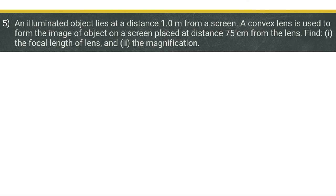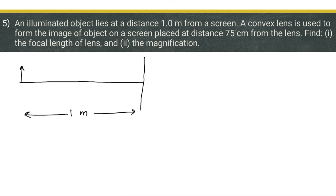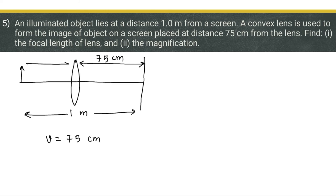Fifth numerical: an illuminated object lies at a distance of 1 meter from the screen. A convex lens is used to form the image of the object on the screen placed at 75 centimeters from the lens. The distance between the object and the lens is therefore 1 meter minus 75 centimeters, giving u = -25 centimeters, and v = +75 centimeters.